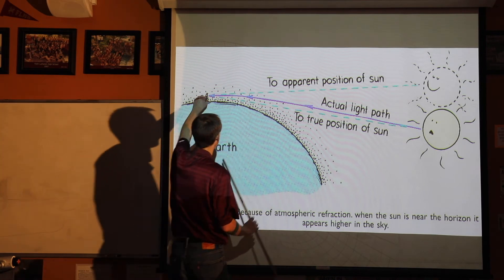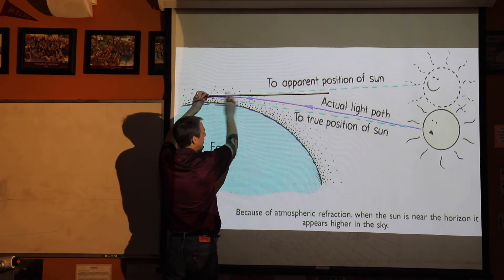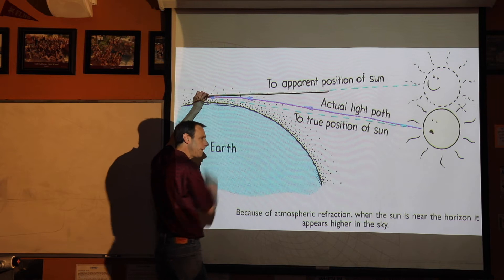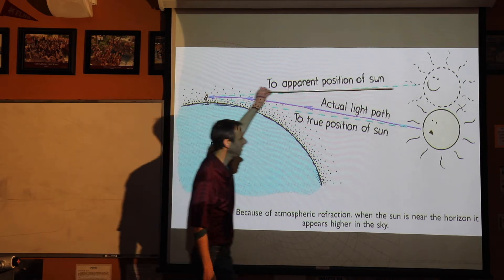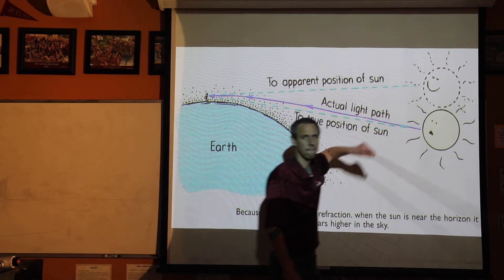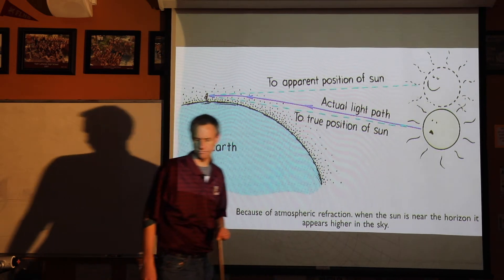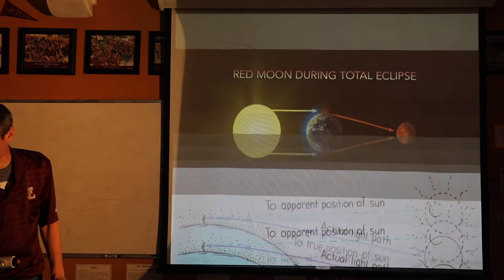If the light twists straight into his eyes, and this light's coming straight in, guess where he thinks the light is? He thinks the sun is straight out — not where it actually is.